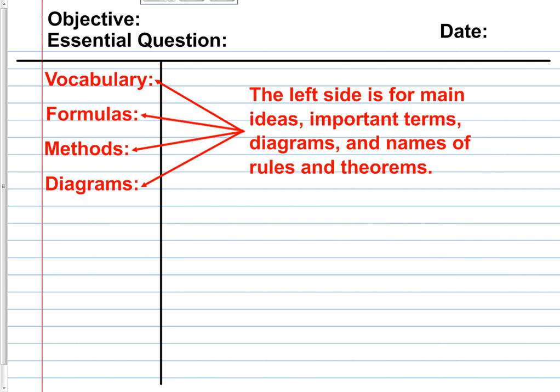Over on the left side, this is the major pieces of information. As you can see on the screen there, vocabulary, formulas, methods, diagrams. These are main ideas, critical information, important terms, names of rules, theorems, stuff like that. This information, it's almost like a table of contents, and it's going to appear in the left hand side of your paper. This is going to be very limited information that's over there. We don't want a lot of stuff over on the left side cluttering things up.